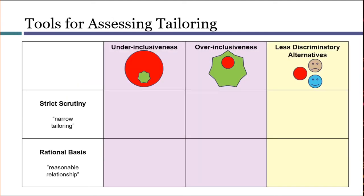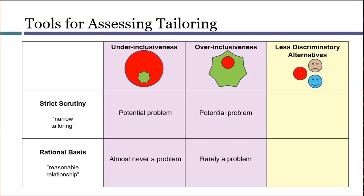As described so far, these tools are somewhat impressionistic, and that's true. But they can help guide us towards some general patterns. If a classification is one that draws strict scrutiny, under-inclusiveness and over-inclusiveness are serious potential problems that could defeat a law. However, at the rational basis level, under-inclusiveness is almost never a problem — think about the filled milk law in Carolene Products, where it left the margarine problem unsolved and the court was not bothered by it. Similarly, it's very rare for over-inclusiveness to be a problem at the rational basis level. Less discriminatory alternatives are generally seen as mandatory in strict scrutiny cases, but they're not required for rational basis cases.